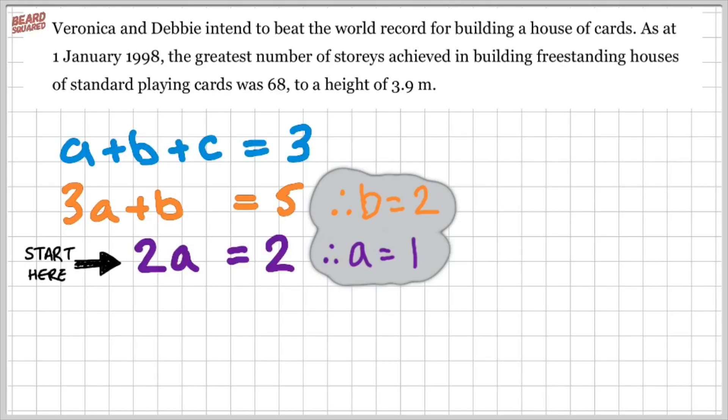Now that I've worked out the values of A and B, I can substitute these values into the third equation to find out what the value of C is. A is equal to 1, B is equal to 2. So 1 plus 2 is 3. 3 plus C is equal to 3. Therefore, C must be 0.